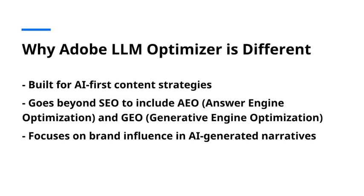This isn't just another SEO tool. Adobe Optimizer is built for AI-first discovery. It goes beyond SEO to focus on AEO — answer engine optimization — and GEO — generative engine optimization — so your content gets cited, summarized, and engaged with accurately in AI results. It's about influencing not just rankings, but AI-generated narratives about your brand.